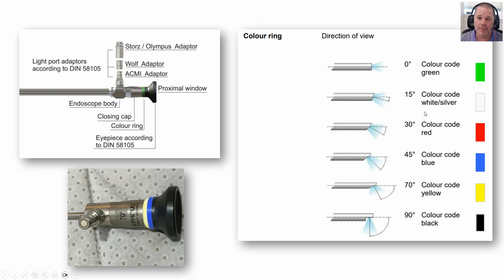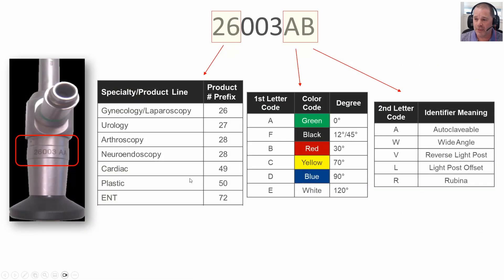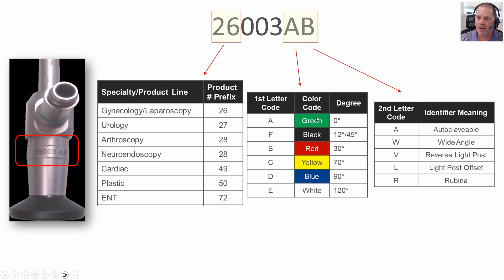Some manufacturers actually use the model number to indicate different things. With this particular manufacturer, the prefix indicates the specialty. They also use the suffix — in this case, the letter 'A' would indicate it's a zero-degree telescope looking straight ahead, and they may indicate that with a green color band ring. Depending on the model of the scope, there are some unique identifiers. For example, if we see a letter 'W' in the middle of the model number, that indicates something unique about the telescope.